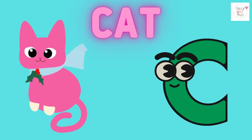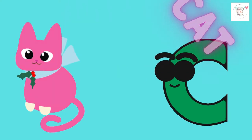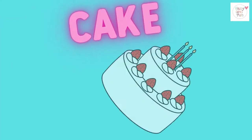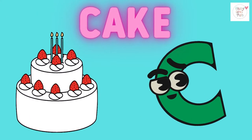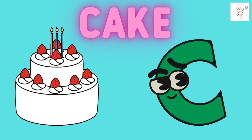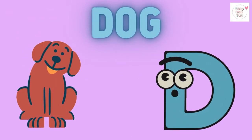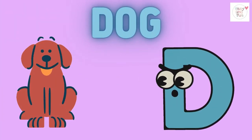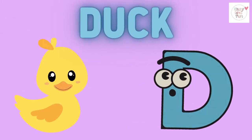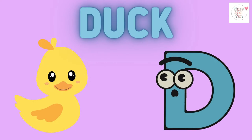C is for cat, c-c-cat. C is for cake, c-c-cake. D is for dog, d-d-dog. D is for duck, d-d-duck.